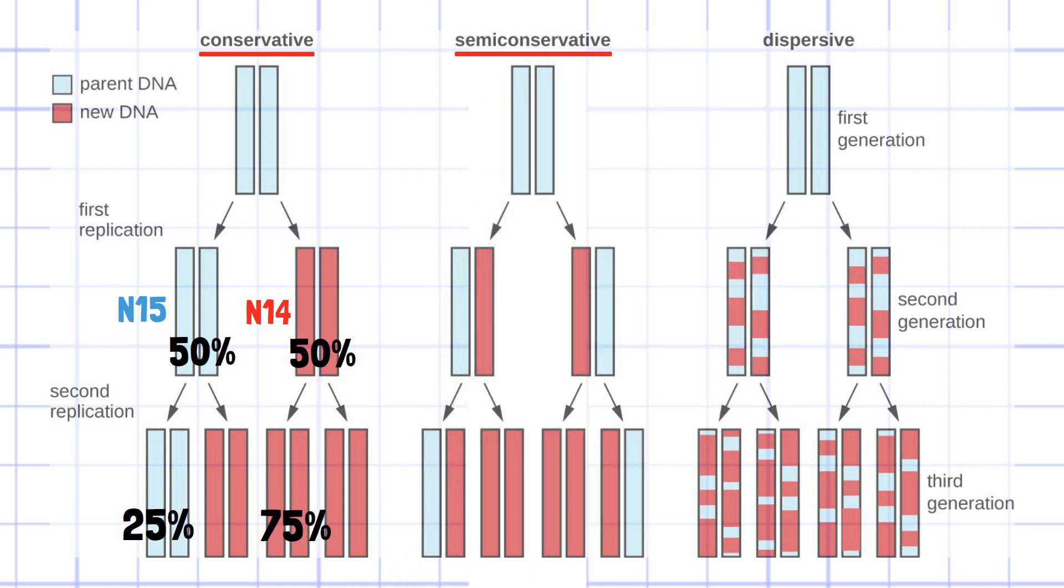If the semi-conservative replication were the truth, heavy DNA is split at first and used as a template. So a band with the mean value of 14 and 15, only 14.5 band will be observed after the first replication.